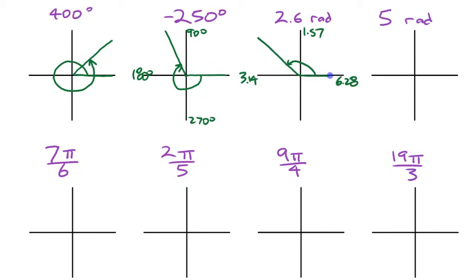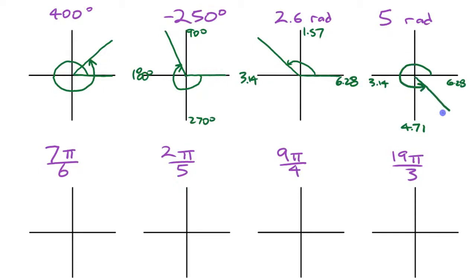For 5 radians: we know it's past 3.14 and before 6.28. Another useful reference point is 1.5 times pi, which equals 4.71 — that's the 270-degree position. Since 5 is past 4.71, it lands just into quadrant four. As long as you have the quadrant right and the approximate location, the exactness doesn't matter as much.